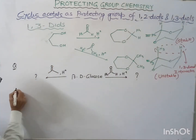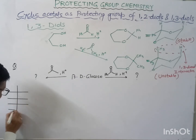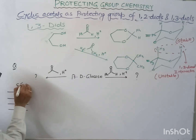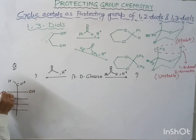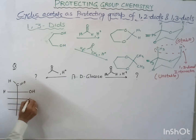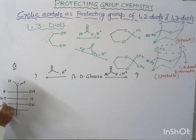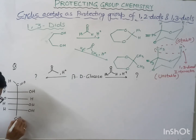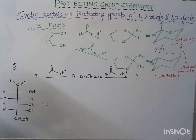The structure of glucose: we have a CHO group, OH at right position, H at left position, then H at right position, OH, then OH, H, OH, and CH₂OH. This can be written in a six-membered ring as well as a five-membered ring.